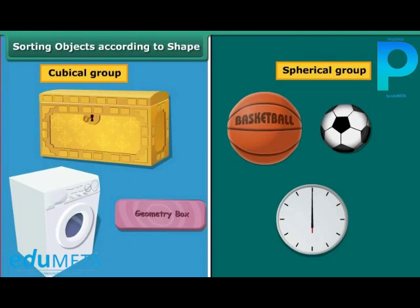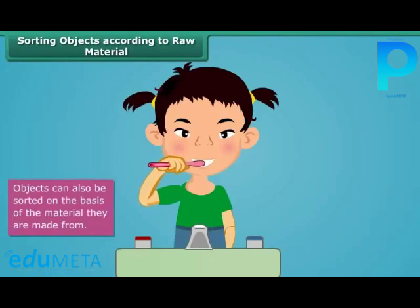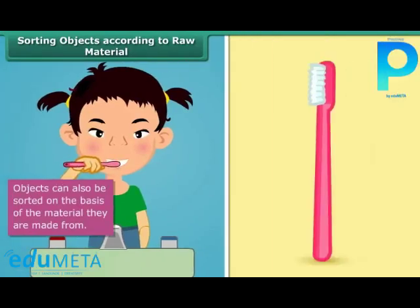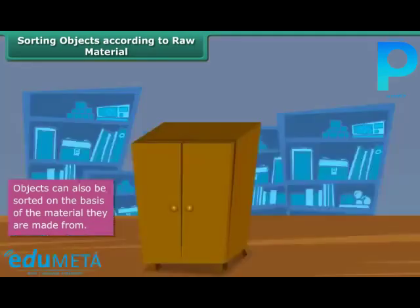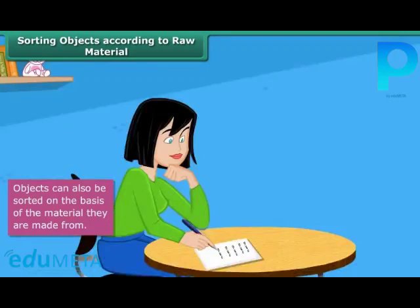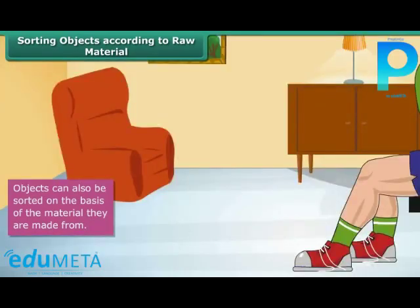The first object you use as soon as you wake up is your toothbrush. Have you ever wondered what it is made of? It is made of plastic. The plate you have your breakfast in is made of melamine or stainless steel. The cupboard you keep your books or clothes in is made of iron or wood. The books that you read are made of paper. The shoes you wear are made of leather, canvas, or rexin.